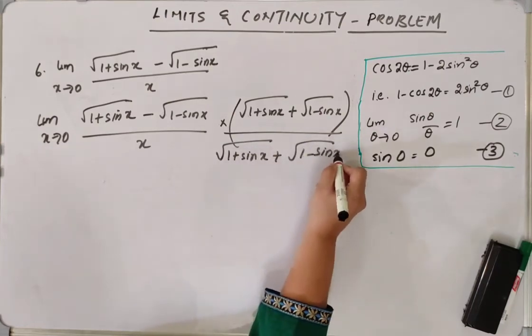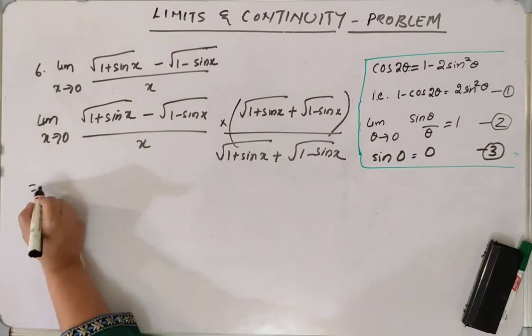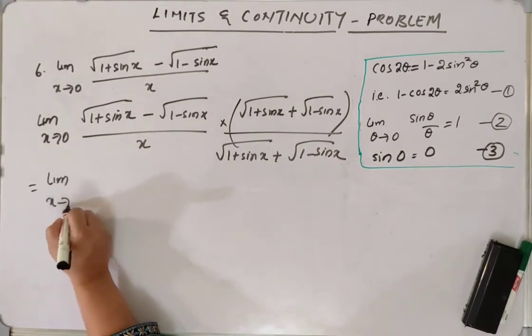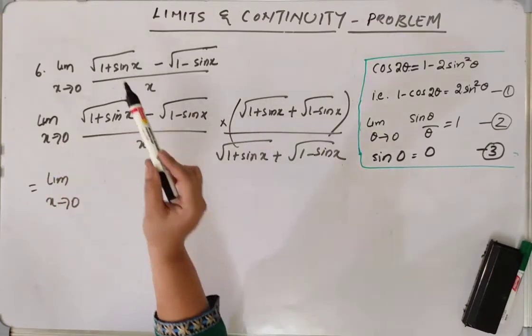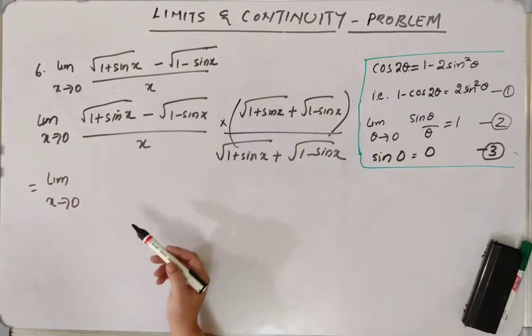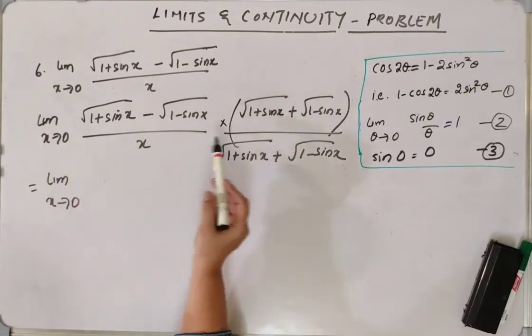1 minus sin x. Now why are we rationalizing this? Because if we substitute x as 0, we are going to get indeterminate. So we are going to get 0 by 0 form. That's why we have to rationalize this.